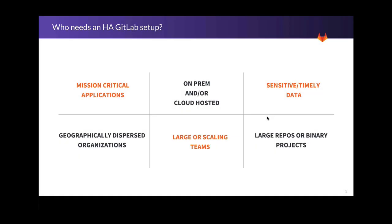In addition to the three main reasons why you would use HA, I've also identified a couple of key indicators that will help you determine if HA is the right setup for you. Essentially, if you are utilizing GitLab for mission-critical applications, if your team is scaling, or if you're hosting large or sensitive data, it's a pretty good idea to utilize HA for your setup, whether you're hosted on the cloud or on-prem.